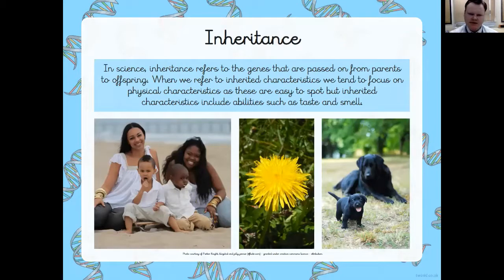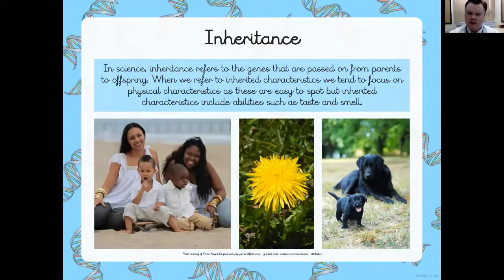In science, inheritance refers to the genes that are passed on from parents to offspring. When we refer to inherited characteristics, we tend to focus on physical characteristics — the things we can see. But things we can't quite see, yet are definitely there and inherited, include our abilities such as taste and smell.